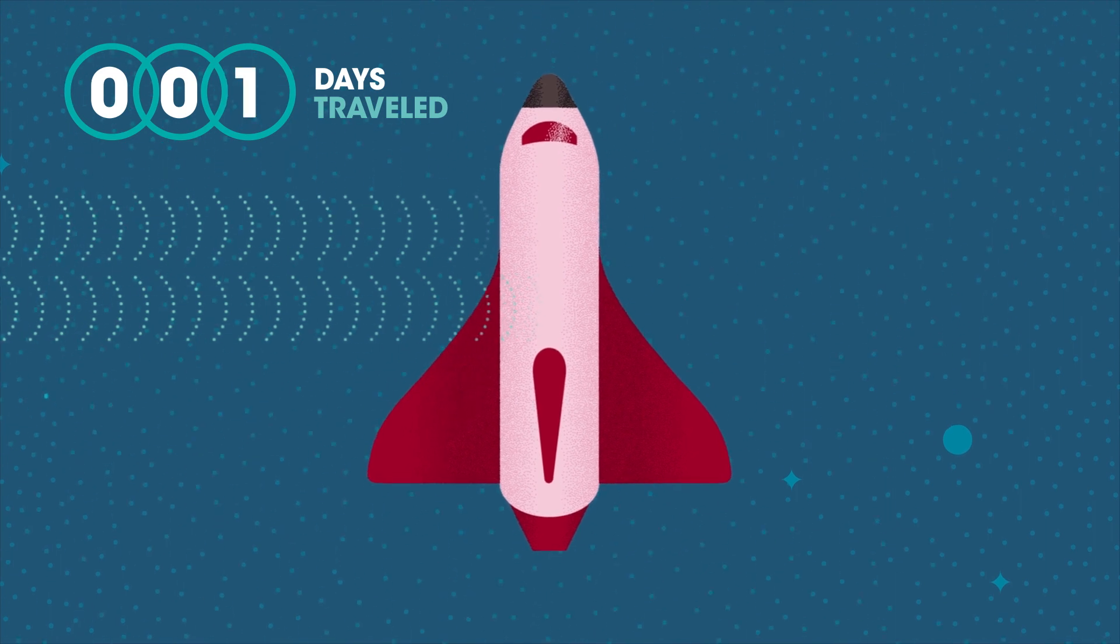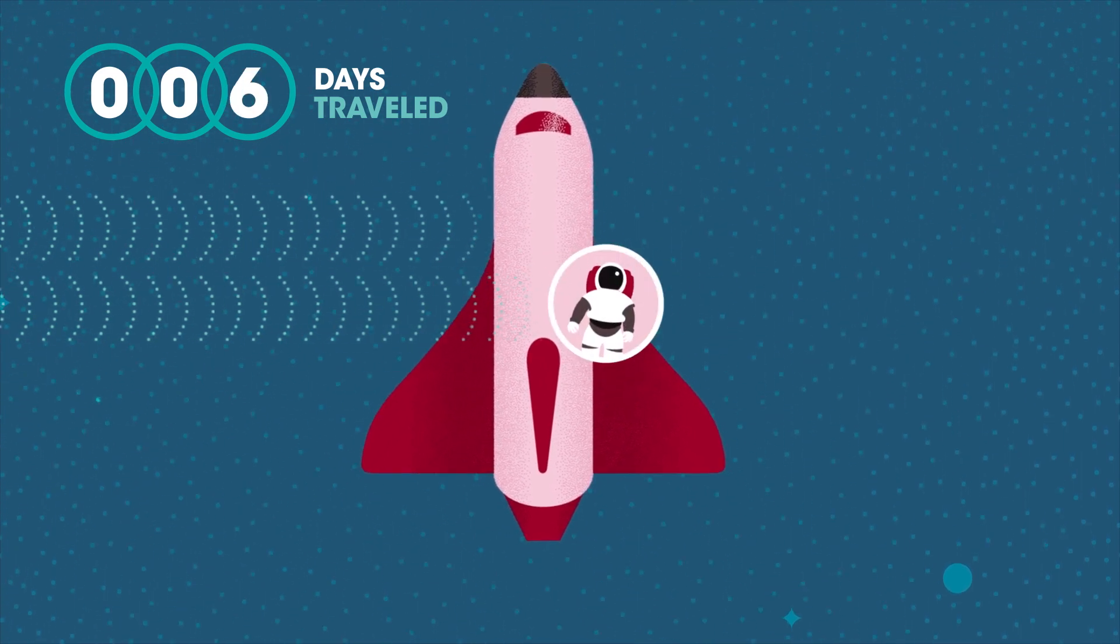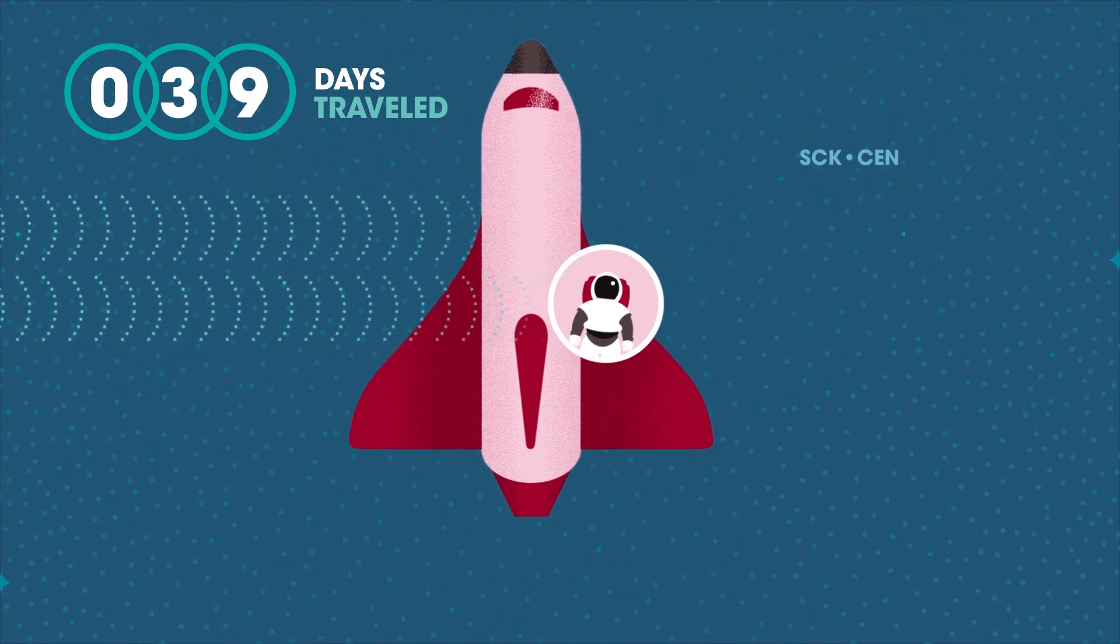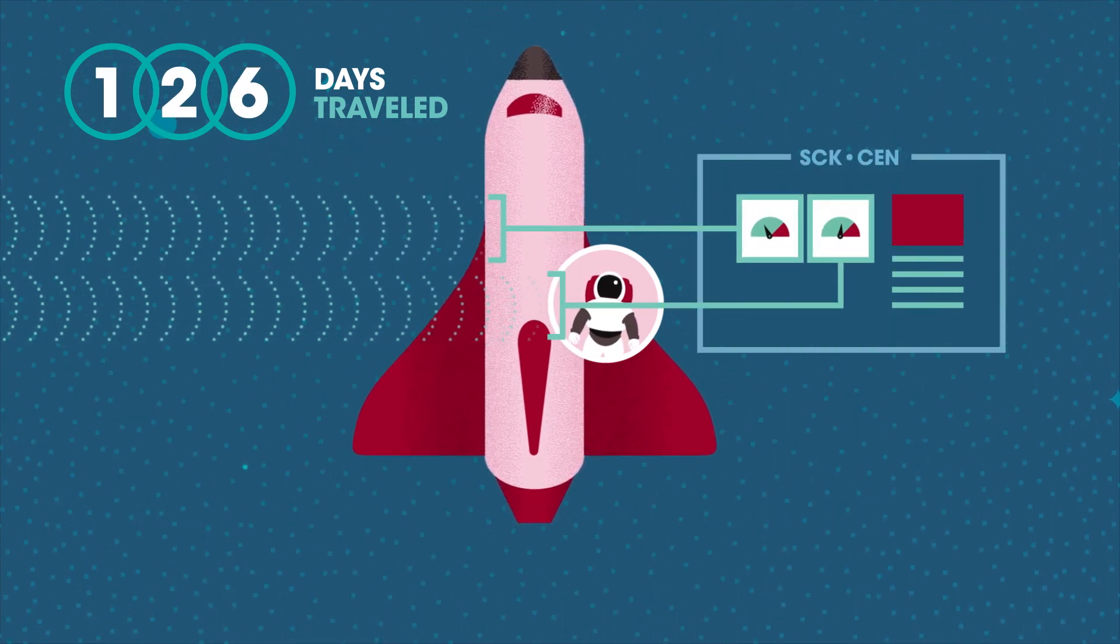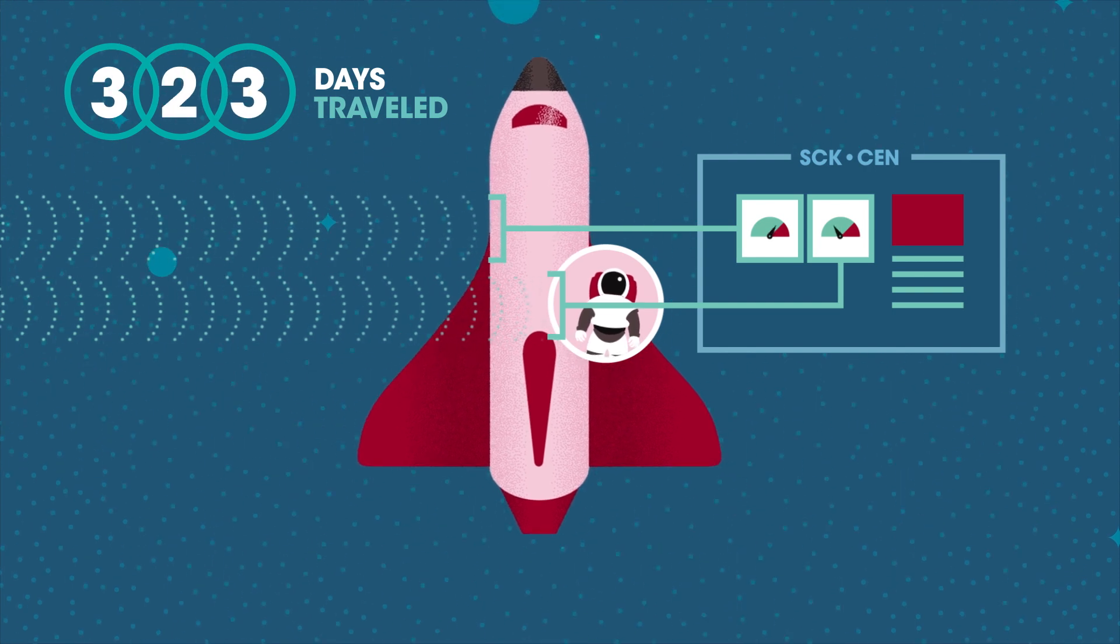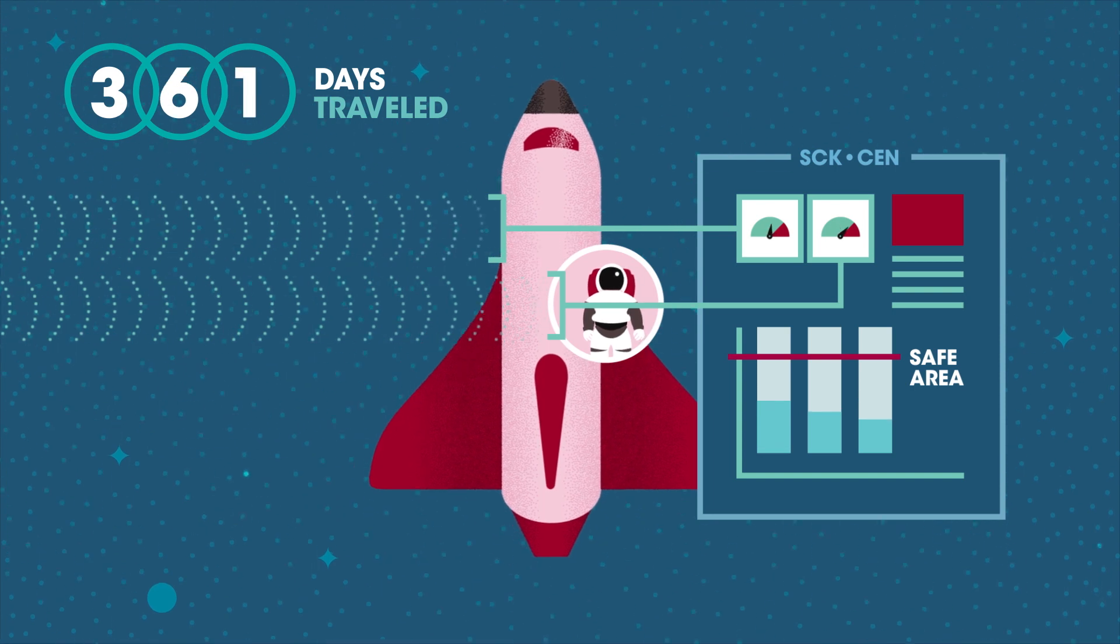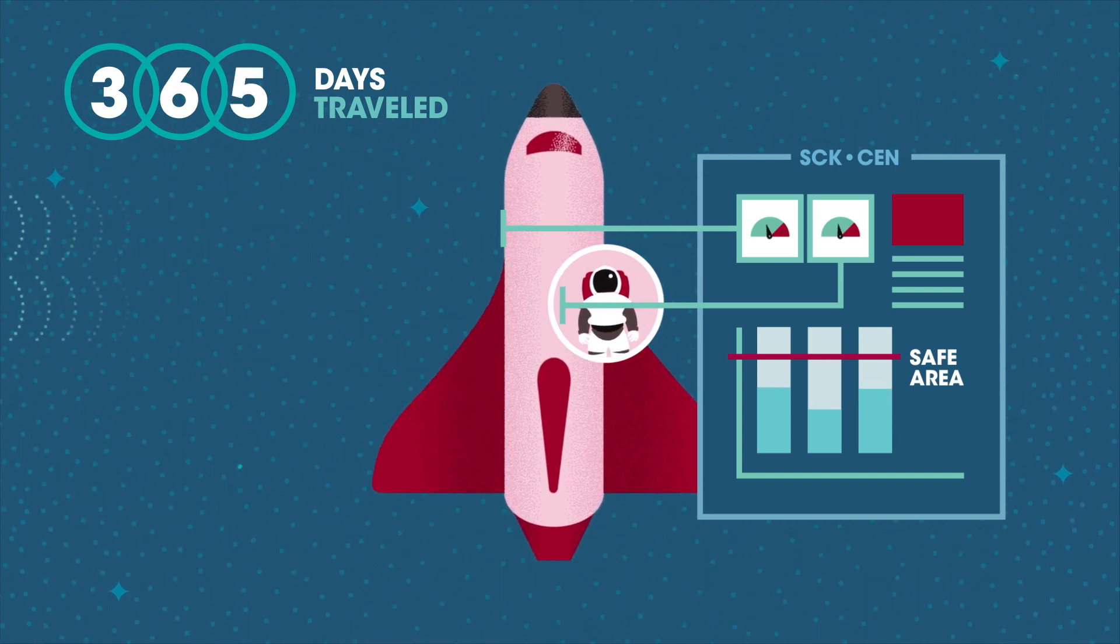To measure the radiation levels astronauts and the ISS are exposed to, the Belgian Nuclear Research Centre, SCK-CEN, has developed dosimeters. They're used inside and outside spacecraft during a mission, because protection against the harmful effects of radiation is key when travelling to the red planet.